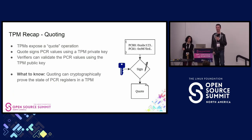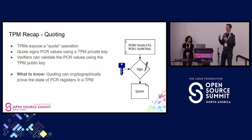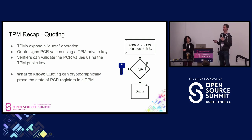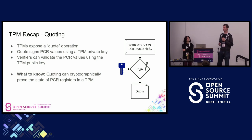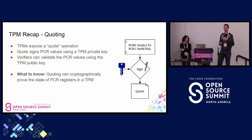TPMs also expose a quote operation — quoting is essentially signing. You take the TPM's private key, select a certain set of PCRs, and sign them. A third-party verifier can then take that quote, the public key, and the manufacturer certificate showing it's a real TPM, and perform cryptographic operations to prove the state of the PCR registers in that TPM. So we have the ability to measure things into the TPM, we have PCRs, we have quoting — but how does that apply to CI/CD?